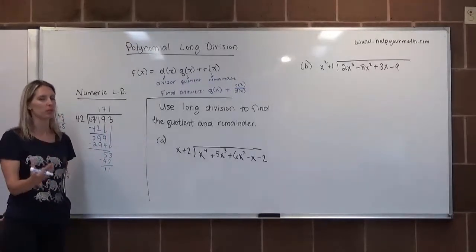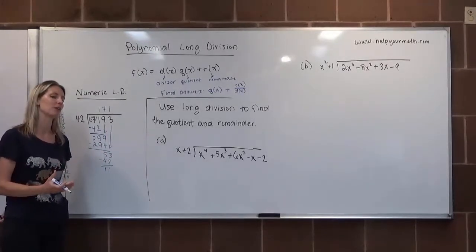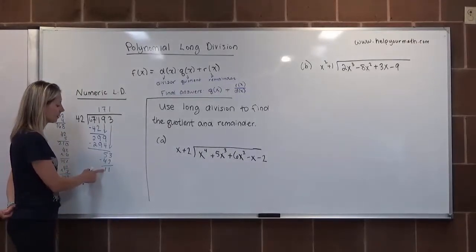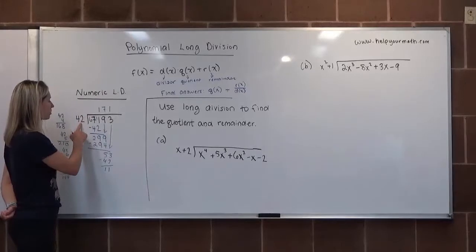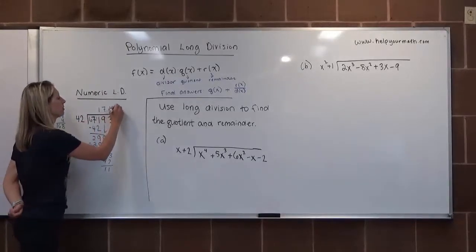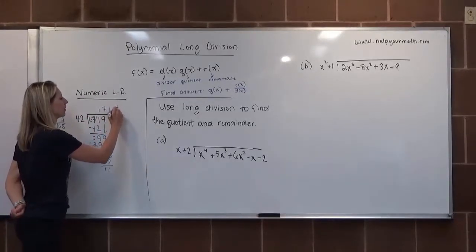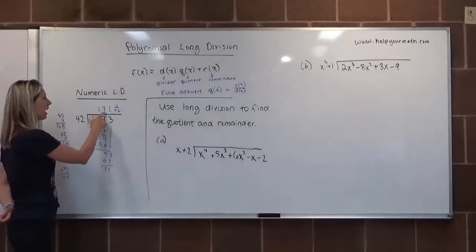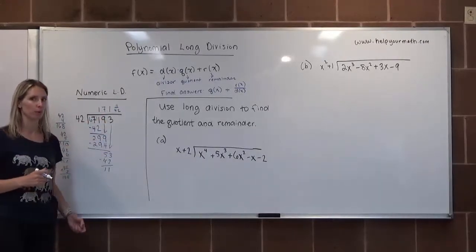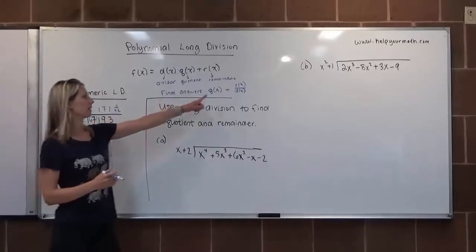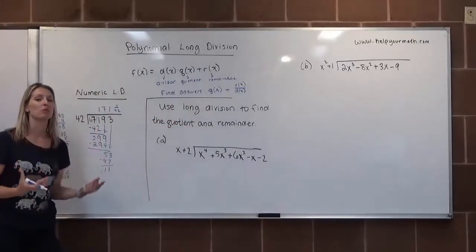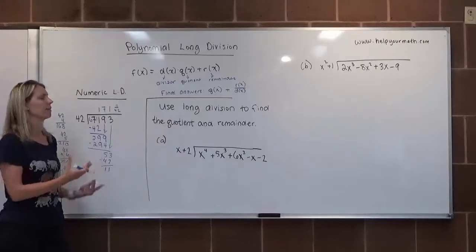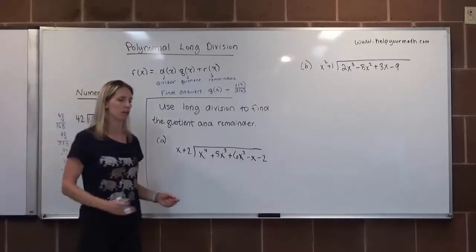But writing 'remainder 11' is what we do in elementary school. What we really should do is take the remainder and put it as a fraction over the divisor — so it would be 11 over 42. Our final answer is 171 and 11/42. That's what our final answers will look like, except when we do polynomial division everything is polynomials.